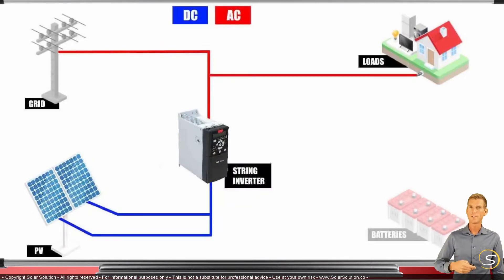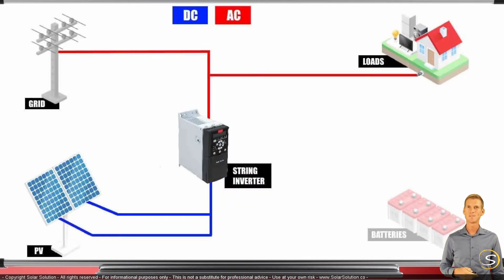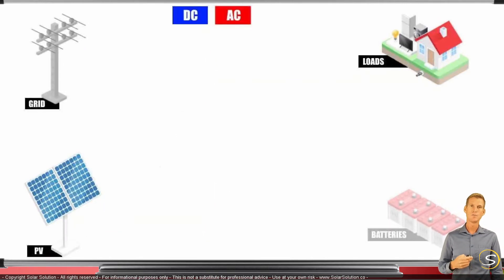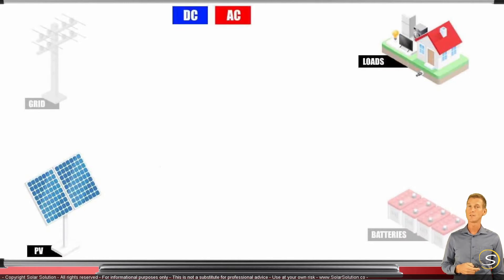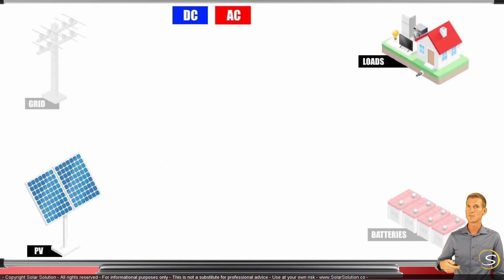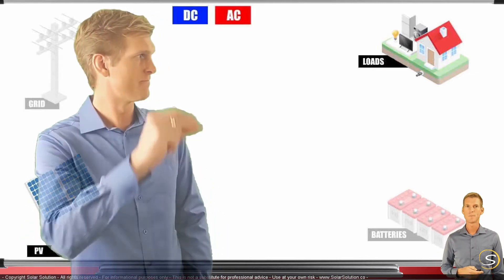Now that we have these components drawn out, let's consider a different situation: you do not have a grid connection — either because you're completely off the grid, or because there's a power outage, a power cut, or there's no grid available after a storm.